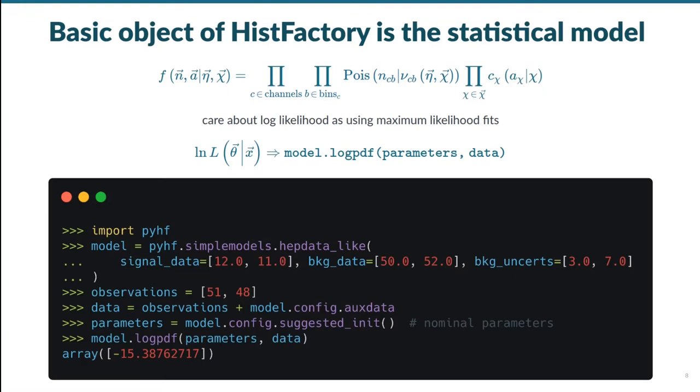Now that we've hopefully motivated the existence of PyHF and the HistFactory formalism, let's dive into the PyHF API a bit. The basic object that is at the heart of everything is, unsurprisingly, the model. However, what we're interested in doing with the model is going to be maximum likelihood fits, so we'll be dealing a lot with the log PDF as we want to get the log likelihood of the model parameters conditioned on the observed data. In this minimal simple example, using just two bins in a single channel, we see that we can create a simplistic model quickly and then with the data from our experimental observations and the model auxiliary constraints, we can get the log likelihood of the default initialization parameters of the model.